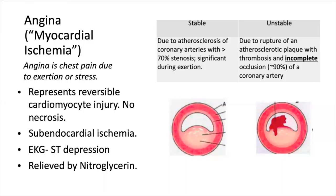There is also Prinzmetal's angina, which is episodic chest pain unrelated to exertion. It's a type of vasospasm which may be caused by cocaine, caffeine, or tobacco consumption, and it causes transmural ischemia.